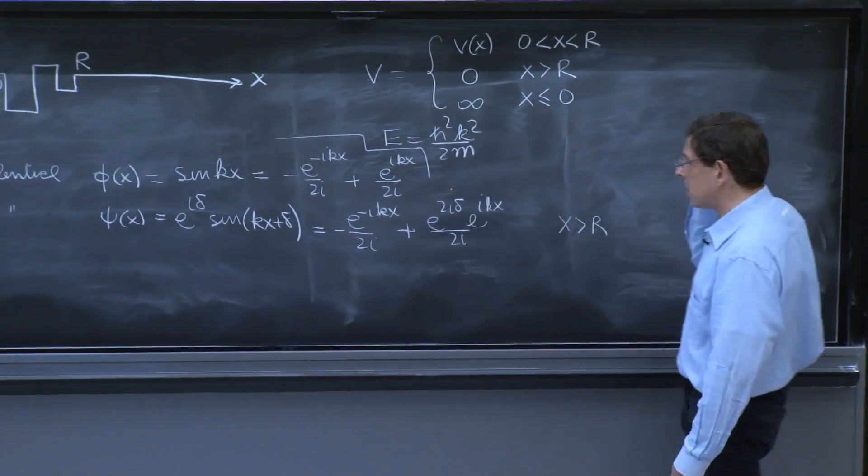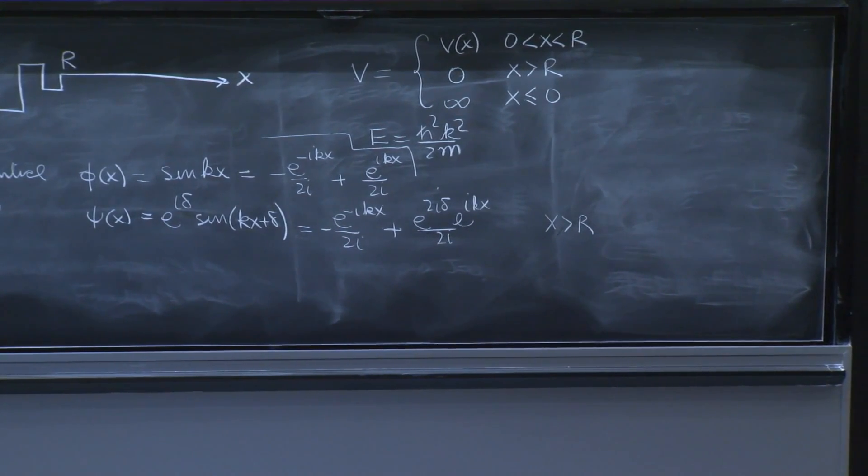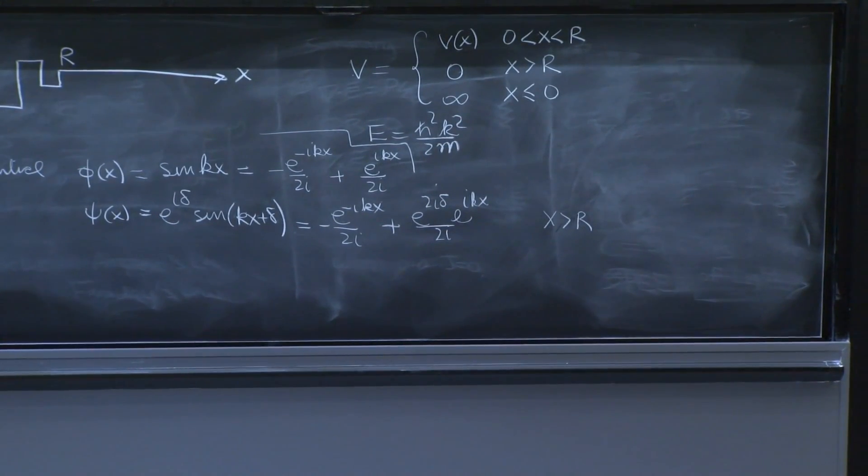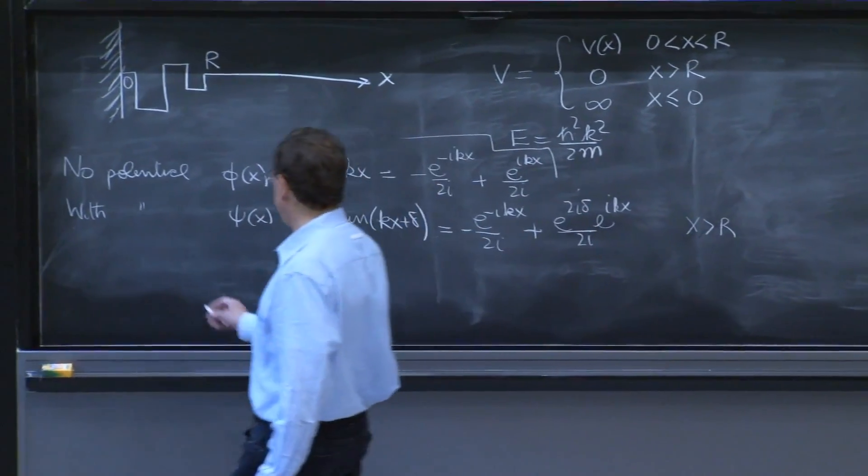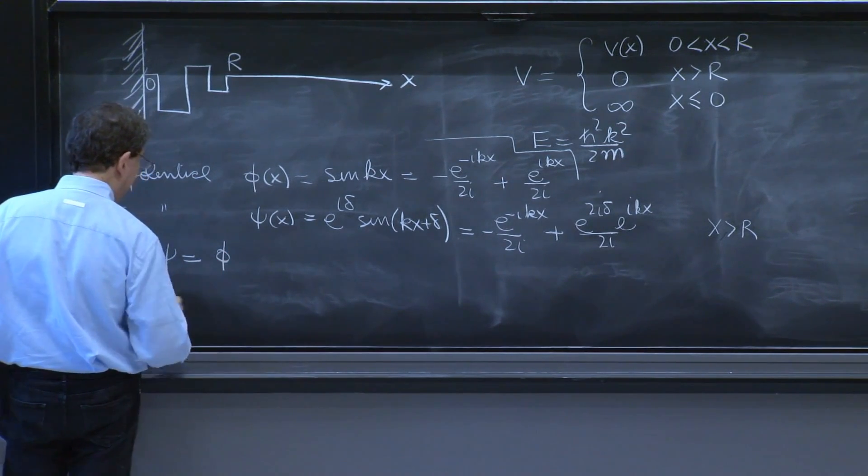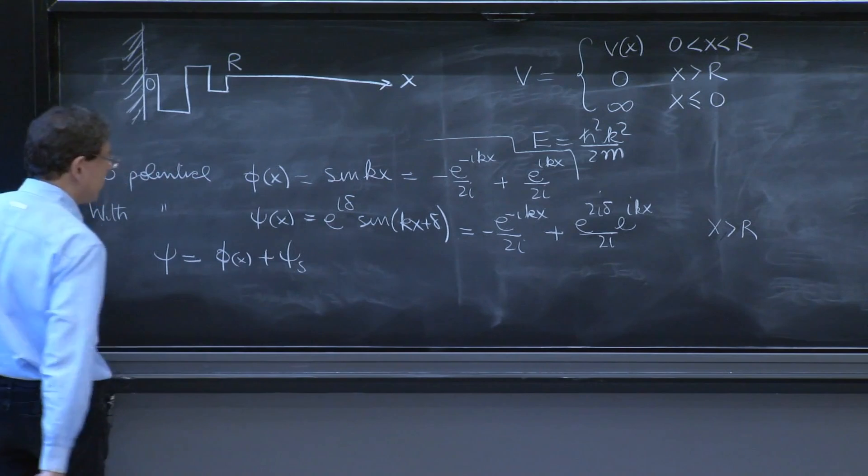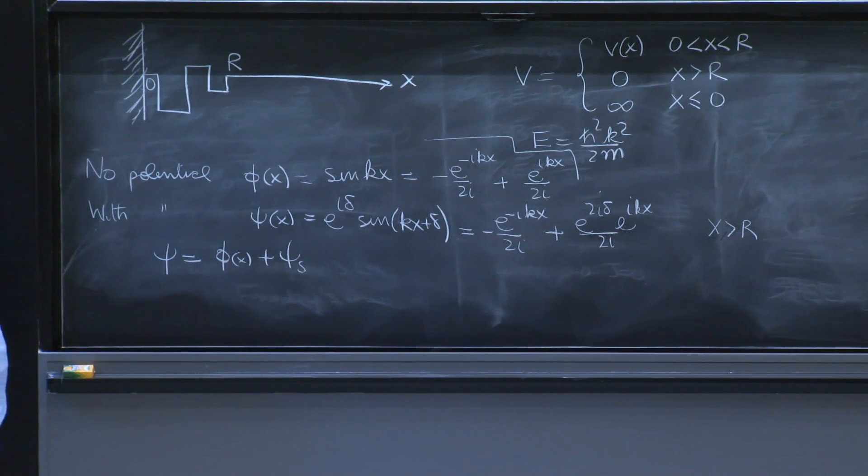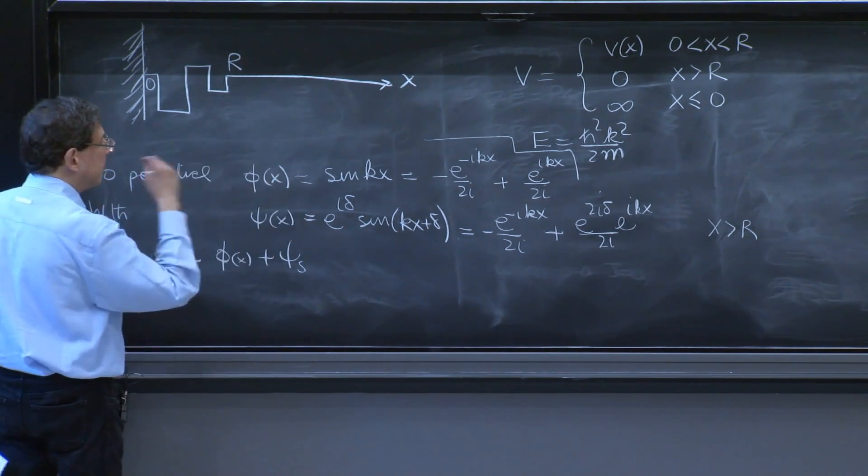Then it produces interesting phenomena when you send in wave packets. So if we write psi, we usually write psi is equal to the phi plus psi s, where psi s is called the scattered wave.